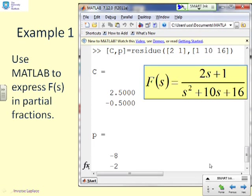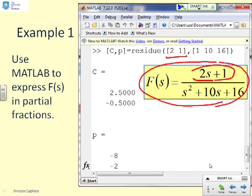First example, then. You'll notice I've given a very simple Laplace transform. F equals 2s plus 1 over s squared plus 10s plus 16. So the first question is, how do we take the information from that transform and put it into residue? Well, you'll notice I've got a vector here, 2, 1, which corresponds to the coefficients of the numerator, and then I've got a vector, 1, 10, 16, which corresponds to the coefficients of the denominator. So that's all you do.